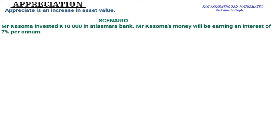Now let's look at the scenario in the question. Mr. Kasoma invested 10,000 in Atrasmara Bank. His money will be earning an interest of seven percent per annum, so every year his money will have an interest of seven percent.